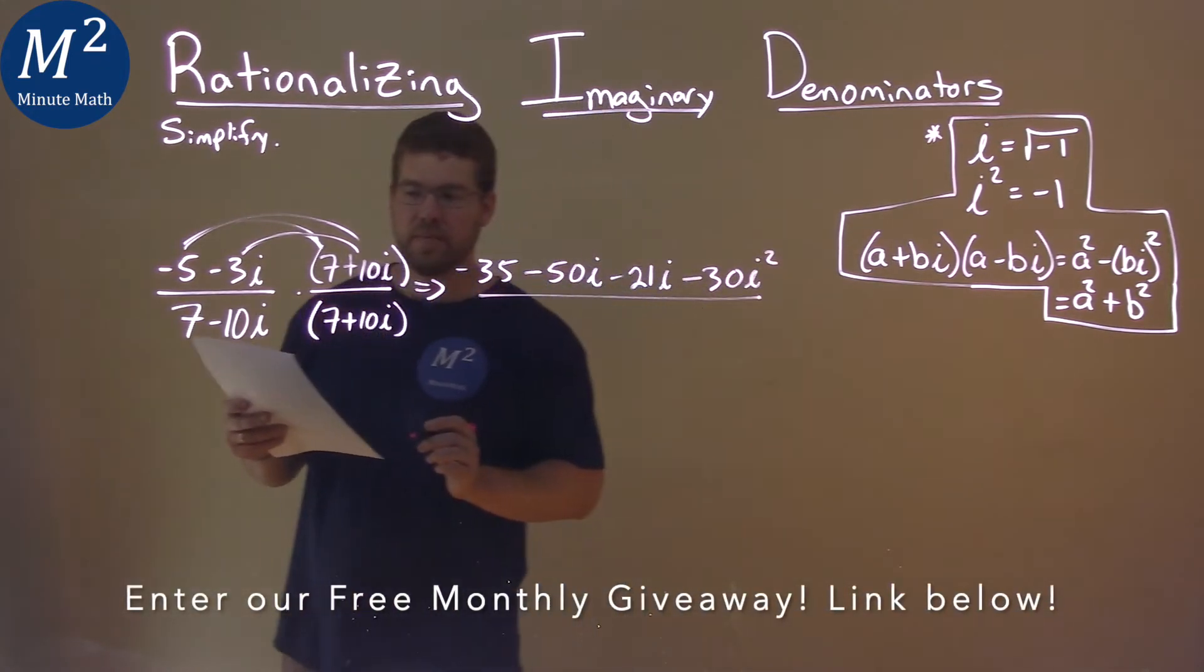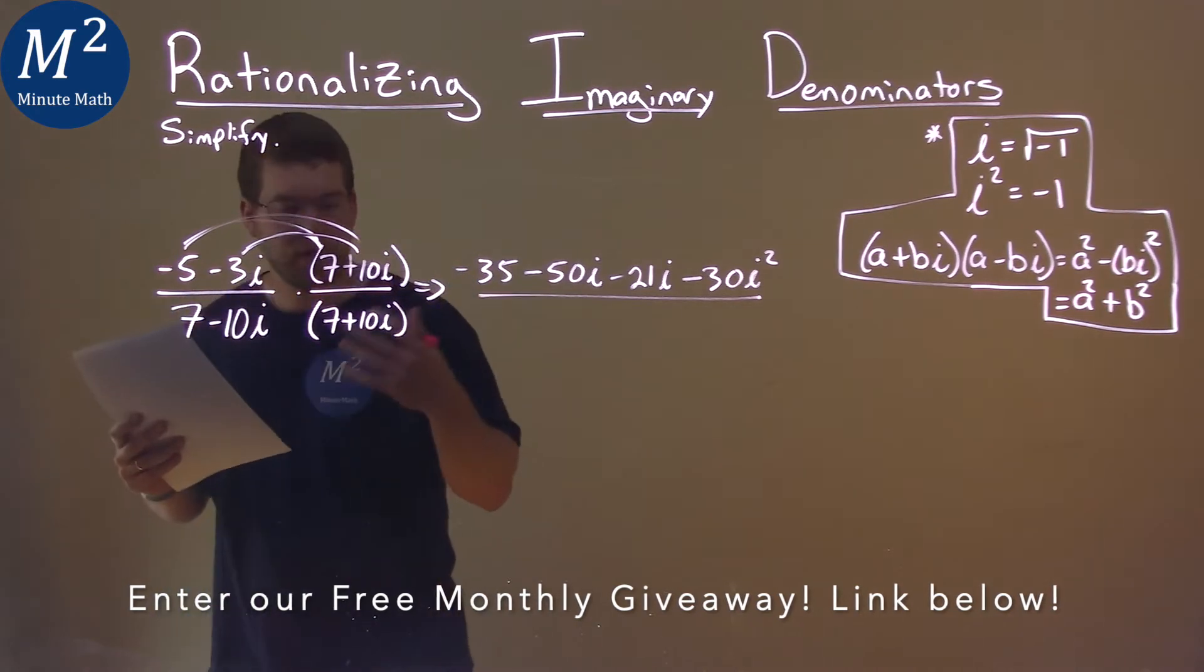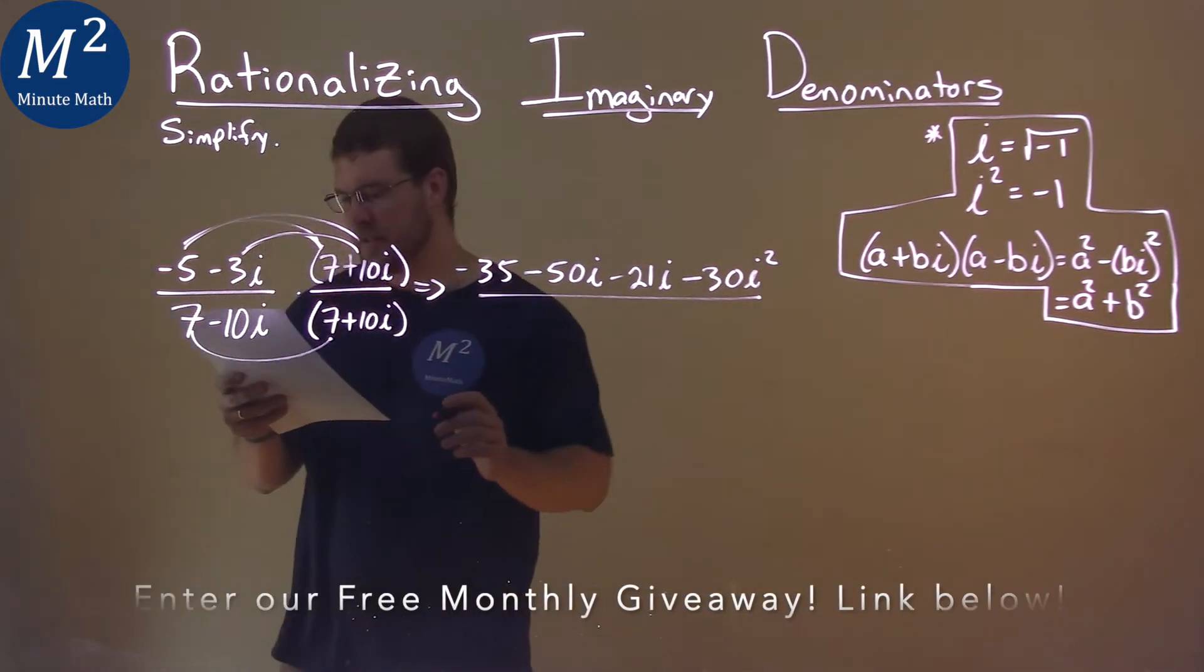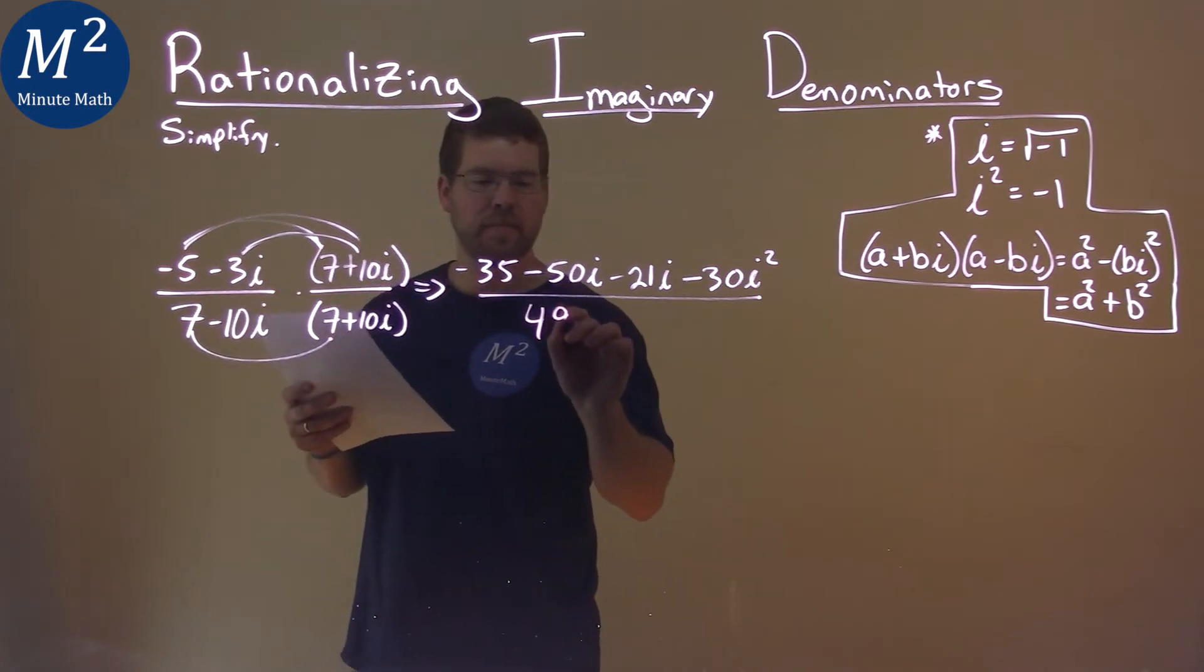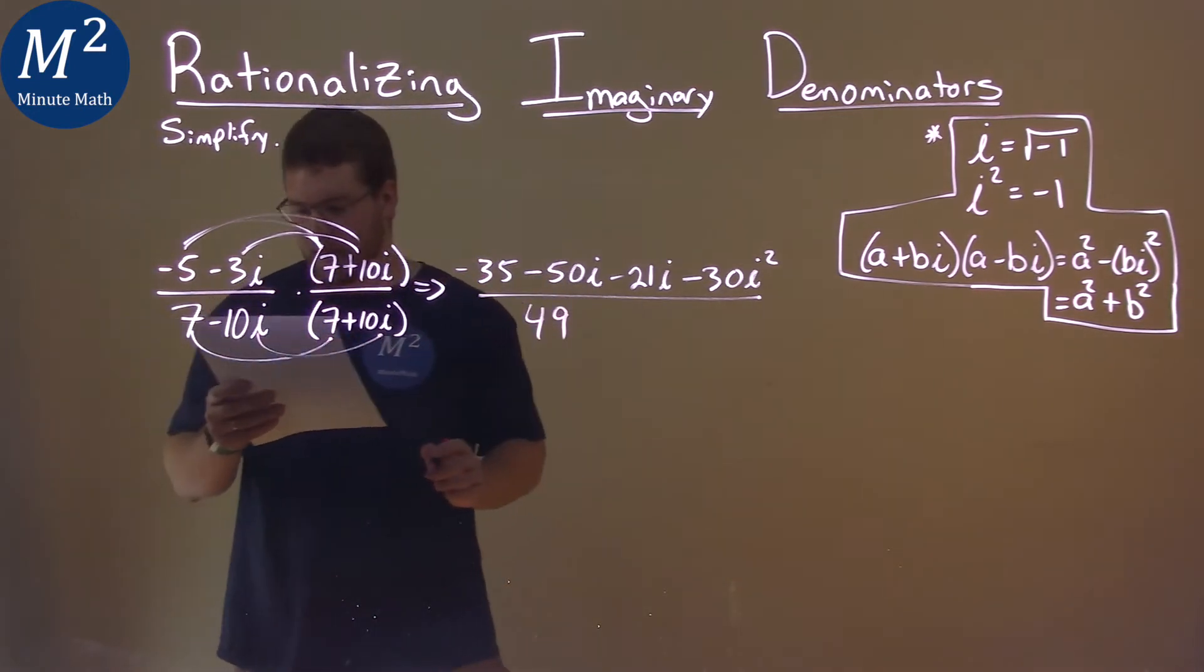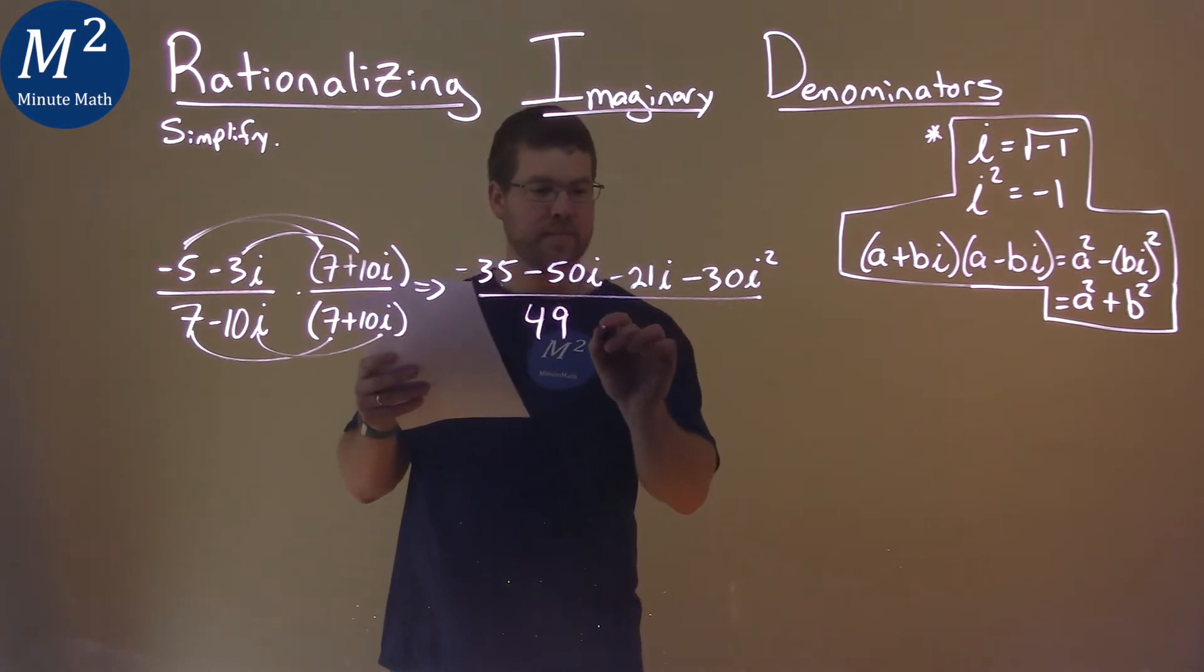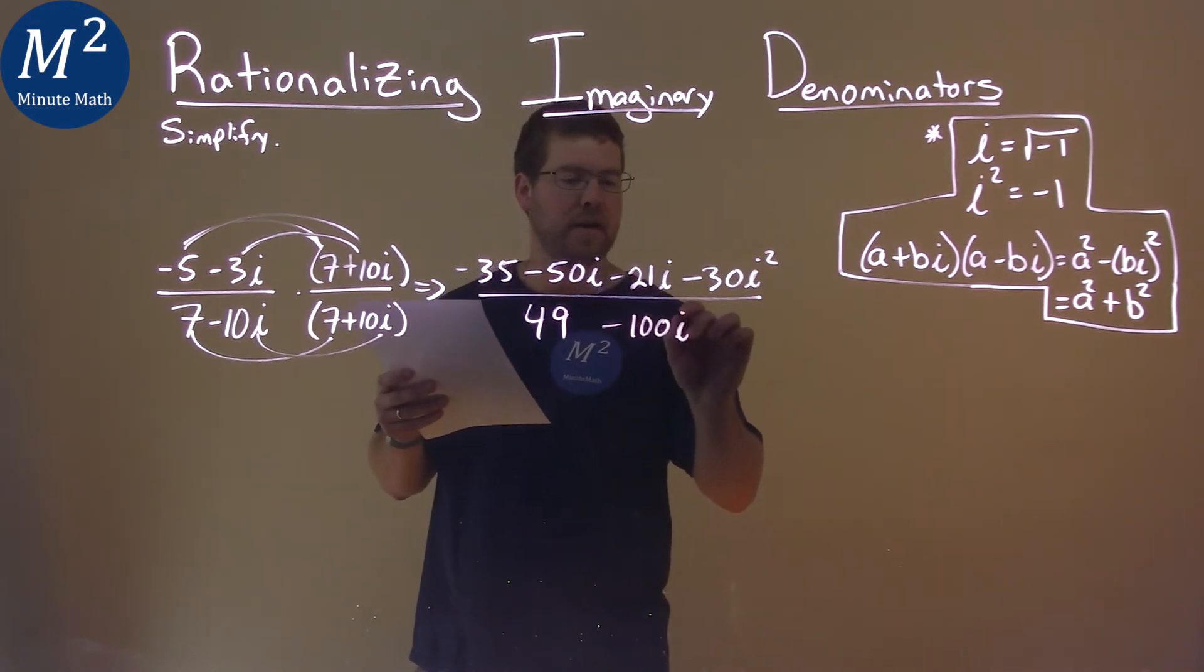Now the denominator. Well, the beauty of multiplying by a complex conjugate is to multiply the first two parts, 7 times 7 is 49, and the second two parts. Negative 10i times 10i is negative 100i squared.